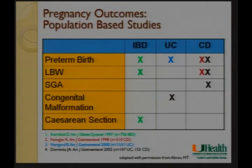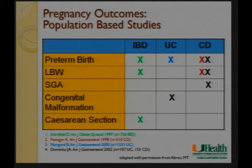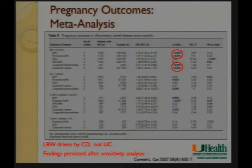A compilation of four different studies shows varying results: all for the most part show increased preterm birth, three of four show lower birth weight (LBW), and there are scattered findings of small for gestational age, congenital malformations, and increased risk of C-section. Population-based studies have shown multiple different findings across different studies.